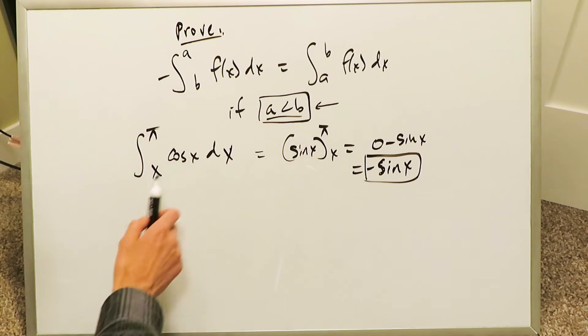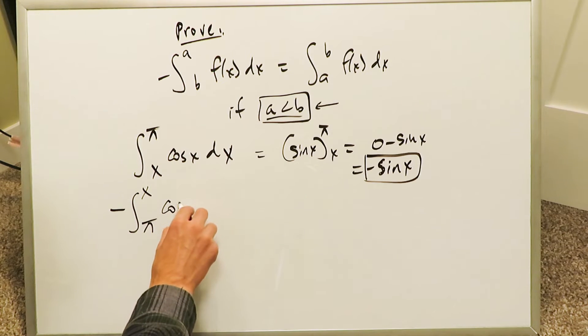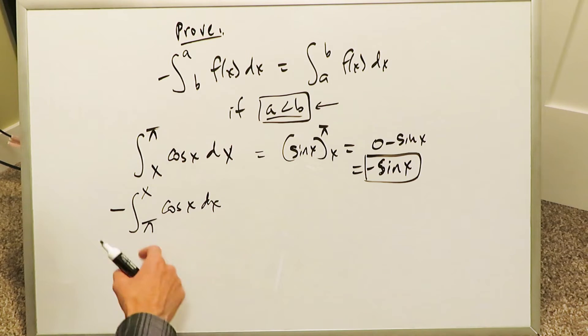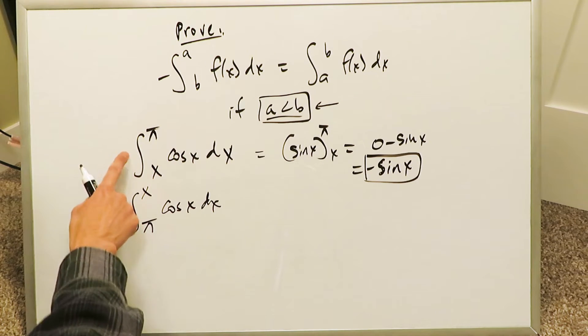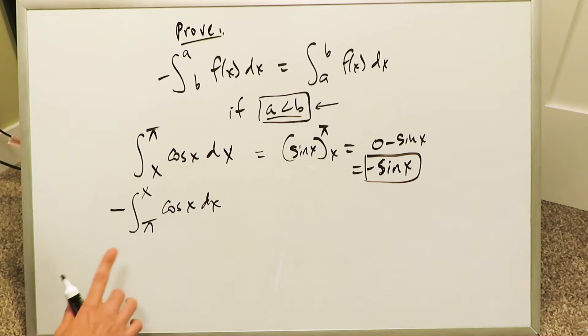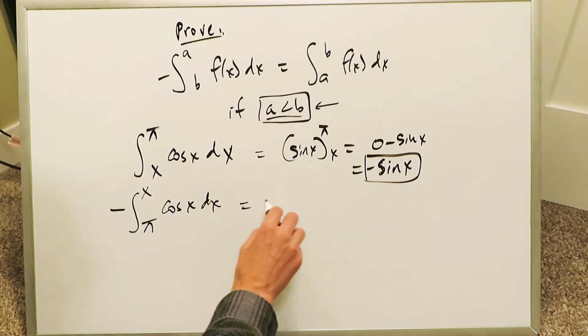Now utilizing this specific property, you could have flipped the intervals around. The limits could have reversed in complete 180 direction and you would be looking at something like this as your new integral. But the statement and this property shows that this outcome should equal to this outcome, and that's all we are interested in proving, and we can integrate this.